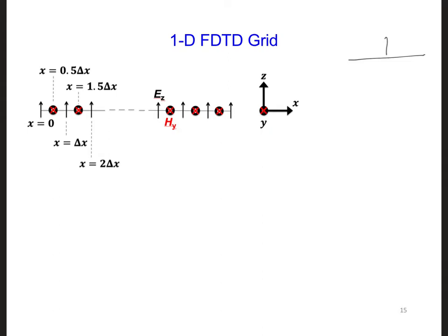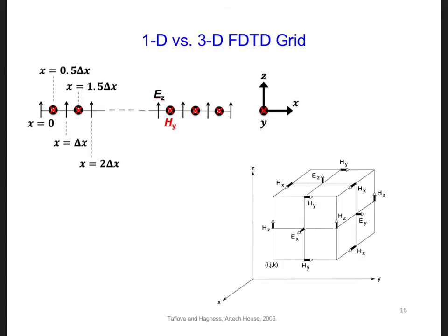We've seen that a one-dimensional FDTD grid involves two field components, one electric field and one magnetic field. If we were to expand the one-dimensional grid to 3D, it would look like this cube.